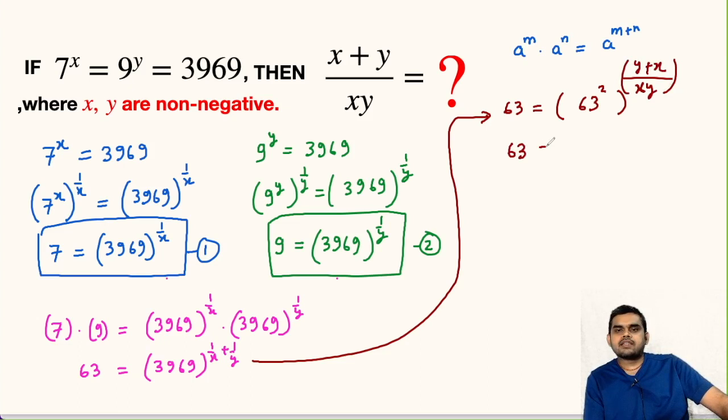Further we will get 63 = 63 whole power, this 2 will get multiplied there. This will be 2 times (y+x)/xy. Again we know a property that a^m power n is equal to a^(m×n). So that is why we multiplied 2 here.